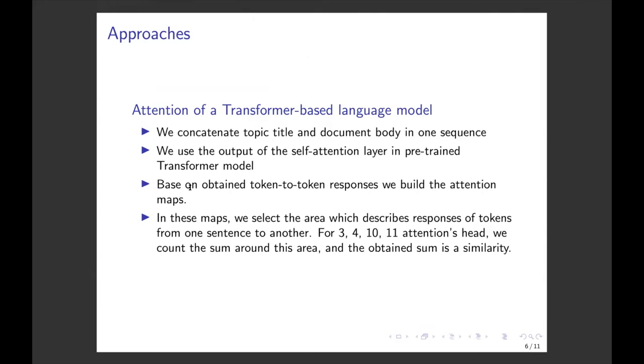The next approach is based on attention of a transformer-based language model. We took a transformer model, a pre-trained transformer model. Transformers can deal with two sentences which are separated by a separation symbol. We concatenate topic title and document body in one sequence. These two sentences were sticked and we process it to transformer input and see the output of the self-attention layer in a transformer model. We consider our sticked document body and topic title as a source and a target, and we have a self-attention map.